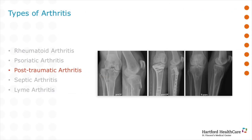Post-traumatic arthritis typically results from an injury to the joint surface. If a broken bone or fracture extends into the joint surface, the smooth cartilage within the joint is damaged and becomes uneven, causing friction and eventual breakdown of the joint leading to arthritis. This can sometimes happen despite our best attempts to repair the joint.